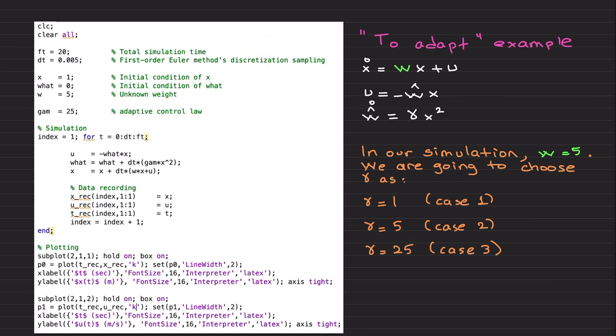Here is the code. What I changed in this code is that I need to initialize w hat. I'm going to choose its initial condition to be zero—I assume I know nothing about the uncertainty. In real world examples, when I implement adaptive control to many much more complex systems, most of the time I assume w hat is zero and let it learn if I have no prior knowledge about uncertainty, and most of the time I don't.